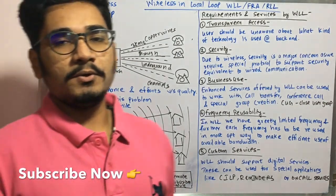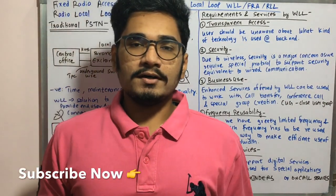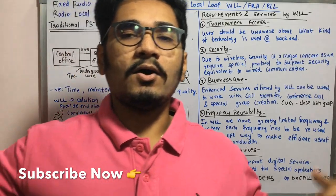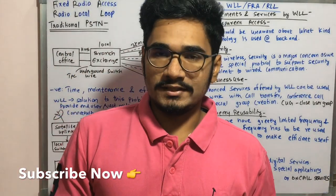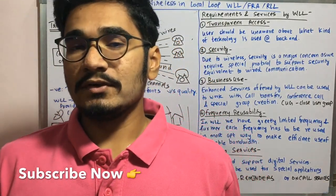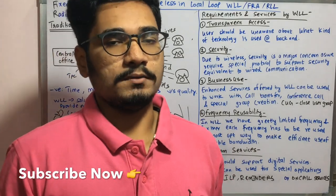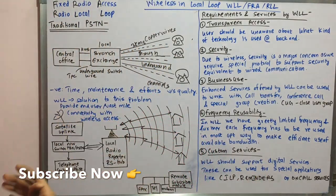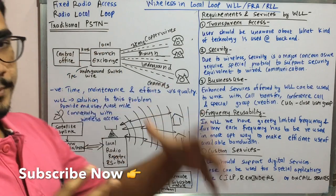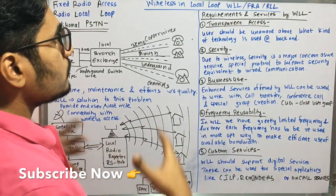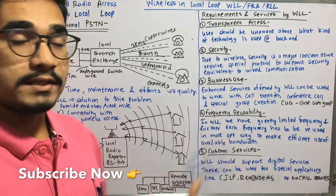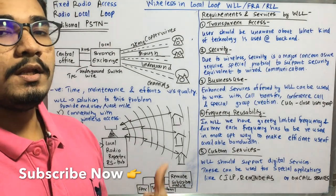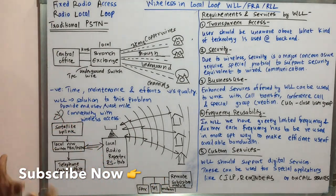Basically, at the beginning of the video, we saw that I was talking on the telephone and there was a long cord. The user was facing difficulties while making a call. WLL is also called as Fixed Radio Access (FRA), as well as Radio Local Loop (RLL).